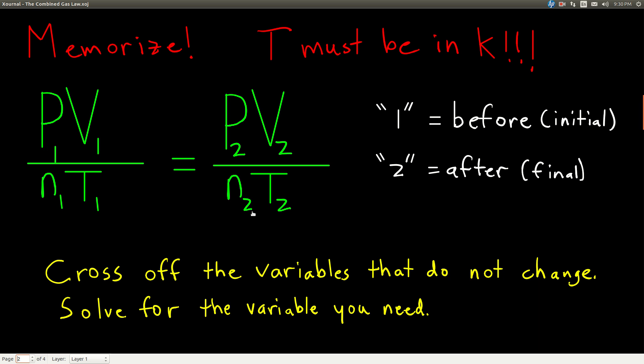In this equation, the subscripts one stand for before or the initial values and two stand for after or the final values or the new values. And what's different from the ideal gas law is that with the ideal gas law, you're given three of the four variables P, V, N, and T, and you're solving for the fourth, whichever one you're not given.